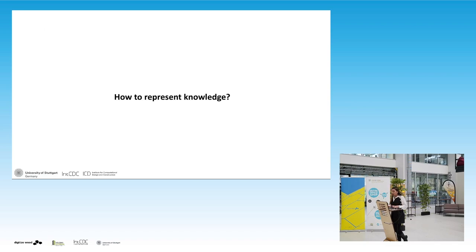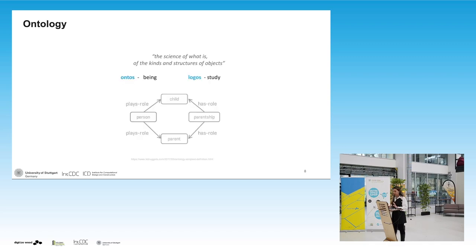The question of how to represent knowledge, how to define what an object is, what is worth being modeled, and to which level of detail we need to extend — there is a science that deals with this, with the definitions of objects and entities, which is ontology. The ontology is basically the science of what is, of what kinds and structures of objects are, and how those structures are related to each other. The word ontology comes from Greek: ontos meaning 'being' and logos meaning 'study.' Here we can see a small ontology chart with a parent, a child, and their role as a person or parentship — modeling a simple relationship between a child and a parent.